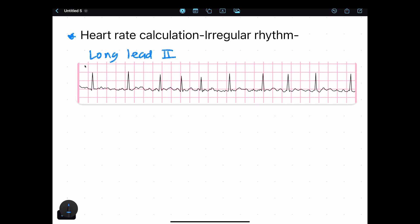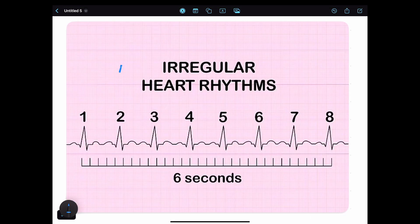How many? Your time is up. Now we are going to see how we can calculate heart rate from irregular heart rhythm. This method is called the six-second method because we are going to calculate R spikes over the period of six seconds.